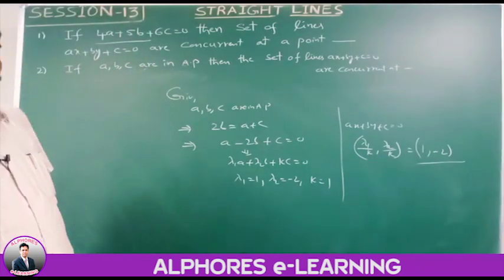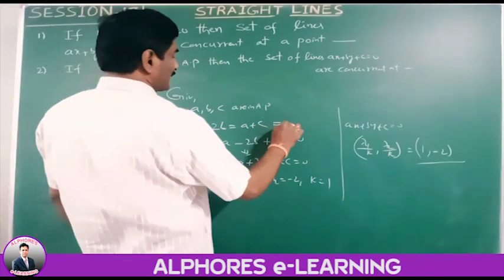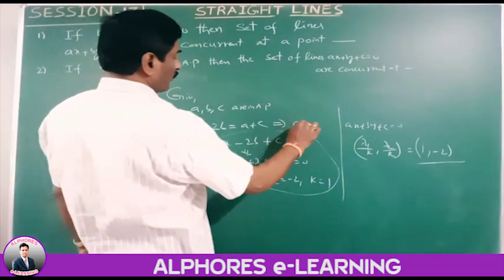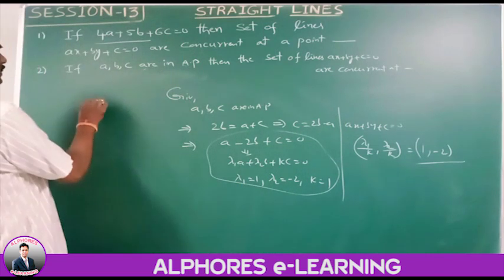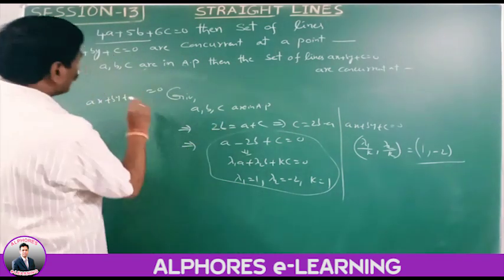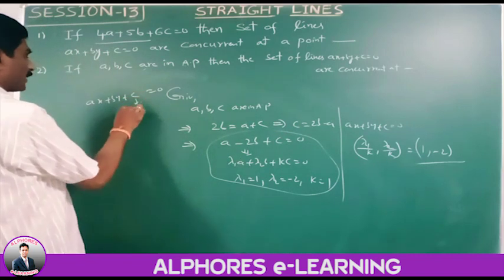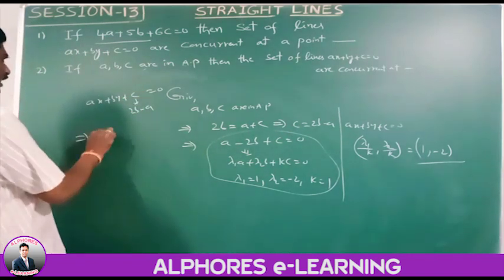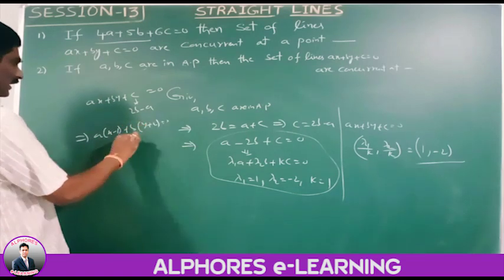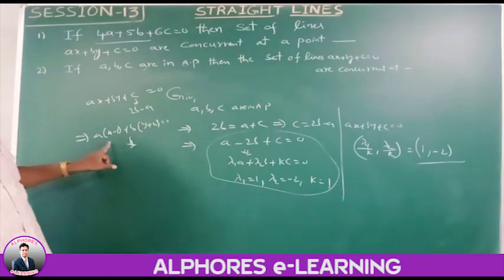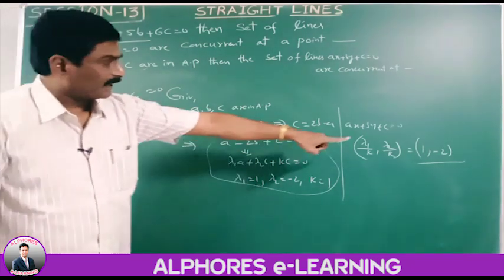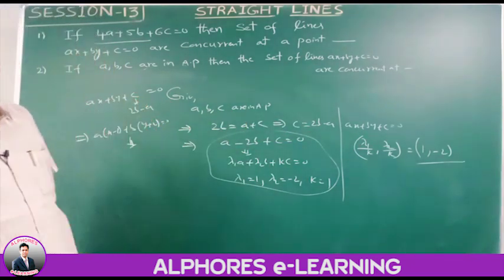Alternatively, by the regular method: c equals 2b minus a. Substituting into ax plus by plus c equals 0 and simplifying, we get a(x minus 1) plus b(y plus 2) equals 0, giving x equals 1, y equals minus 2. The point of concurrency is (1, minus 2).